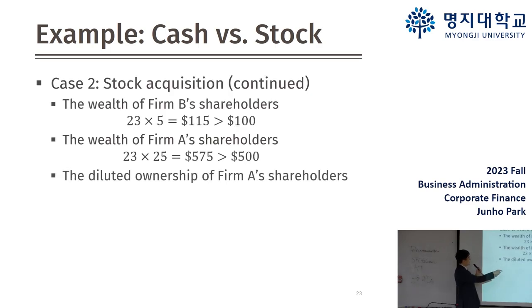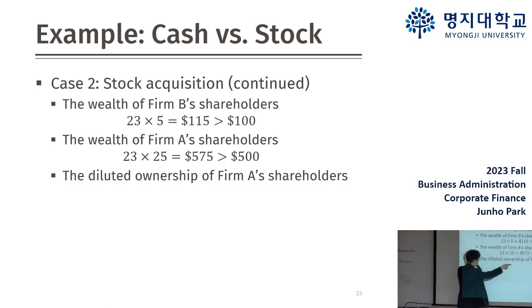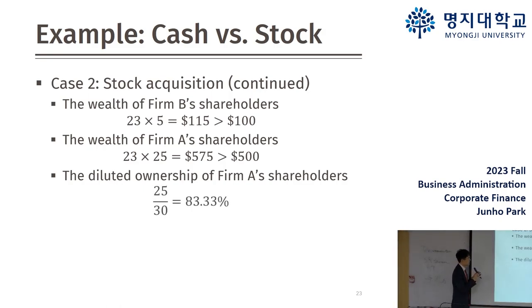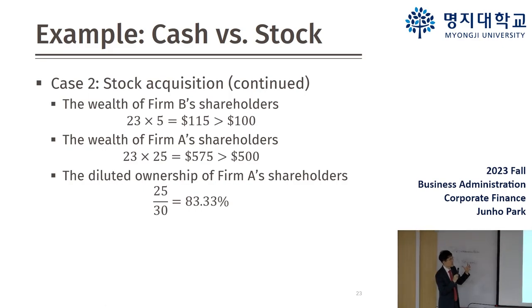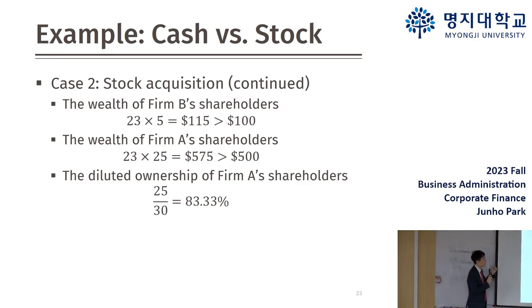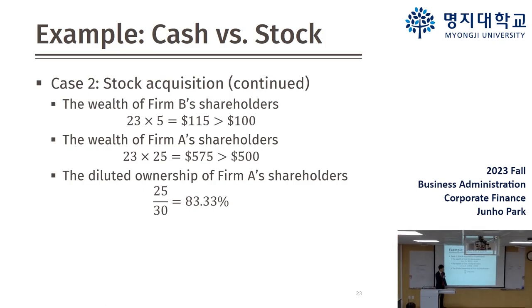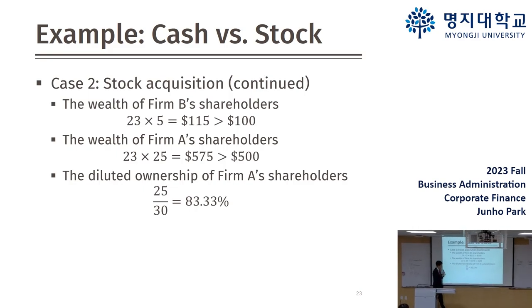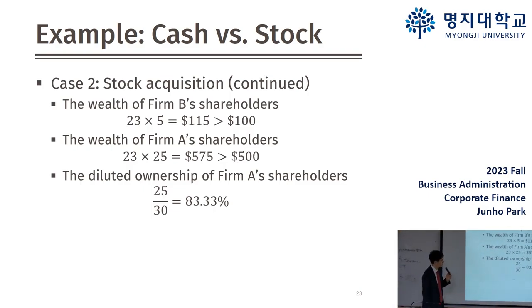The key difference between cash and stock acquisitions is ownership. In a cash acquisition, the acquirer retains 100% control. In a stock acquisition, the original shareholders' ownership is diluted — from 100% down to approximately 83% — because new shares have been issued to the target's former shareholders.